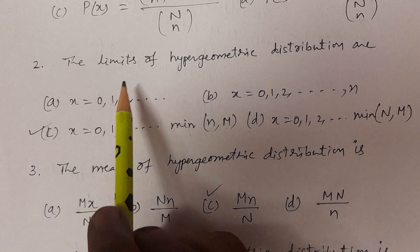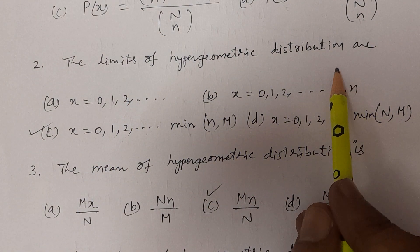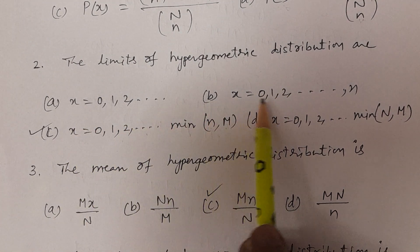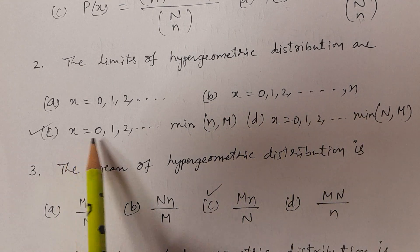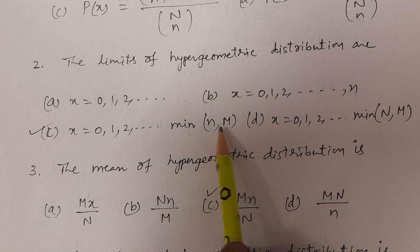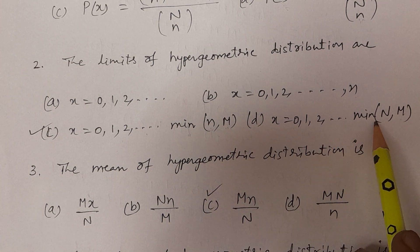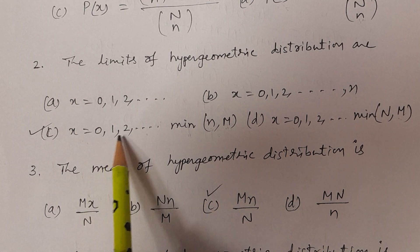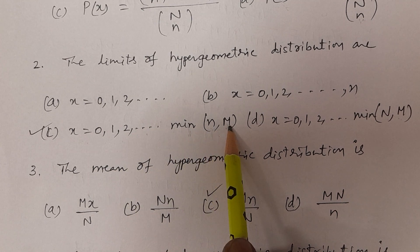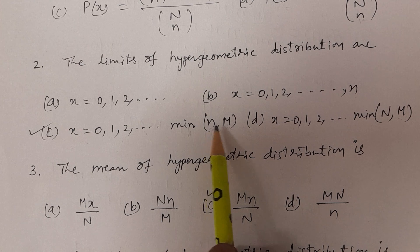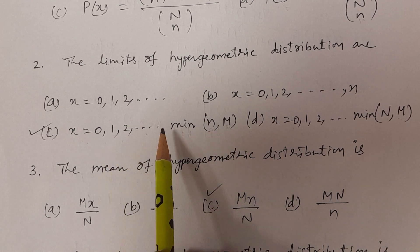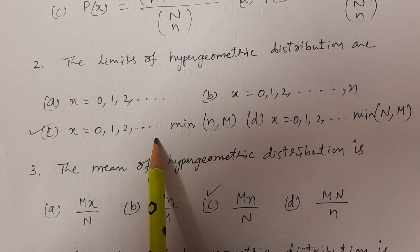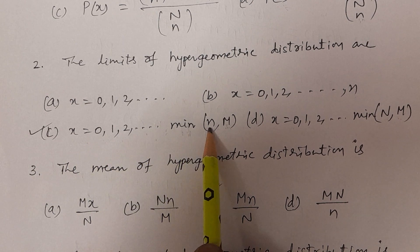In Telugu: the limits of hypergeometric distribution — X = 0, 1, 2, and so on to the minimum of small n and capital M. The answer is Option C: X = 0, 1, 2, and so on, minimum of small n and capital M. That is the maximum limit for X.